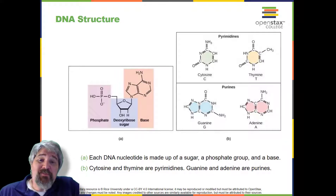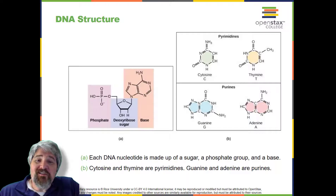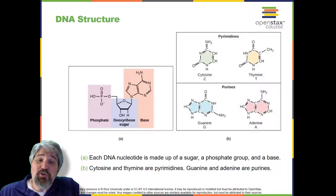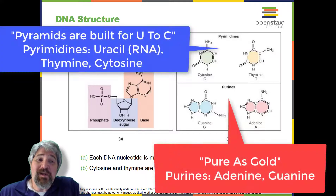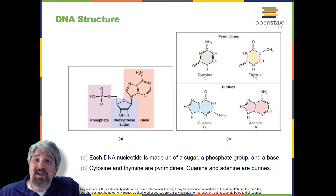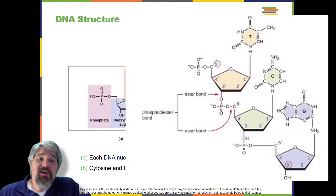Now let's consider the structure of the two types of nucleic acid: deoxyribonucleic acid (DNA) and ribonucleic acid (RNA). The building blocks of DNA are nucleotides, which are made up of three parts: a deoxyribose (a 5-carbon sugar), a phosphate group, and a nitrogenous base, as seen in this figure. There are four types of nitrogenous bases in DNA. Adenine and guanine are double-ringed purines, and cytosine and thymine are smaller, single-ringed pyrimidines. The nucleotide is named according to the nitrogenous base it contains. The phosphate group of one nucleotide bonds covalently with the sugar molecule of the next nucleotide, forming a long polymer of nucleotide monomers. The sugar-phosphate groups line up in a backbone for each single strand of DNA, and the nucleotide bases stick out from this backbone.